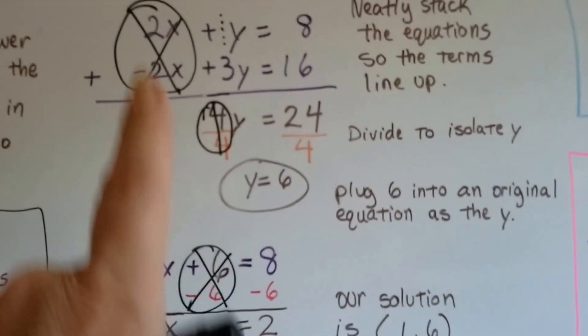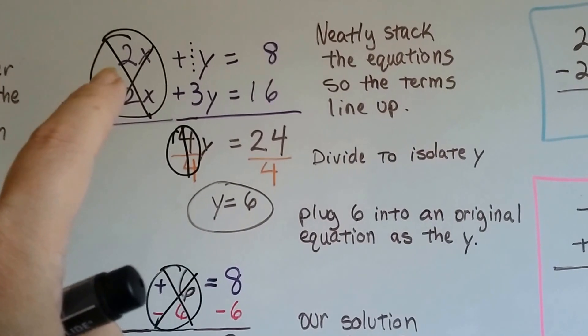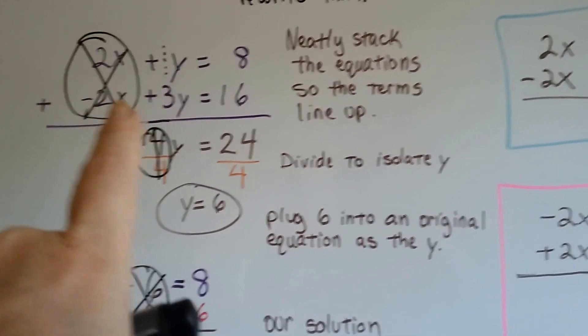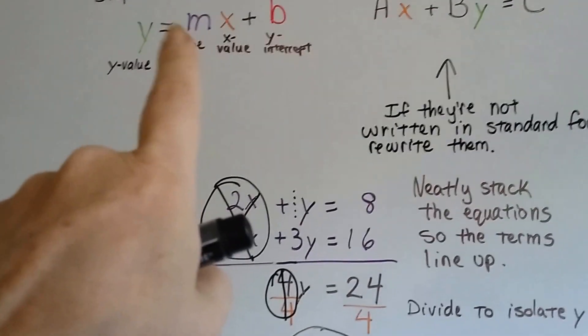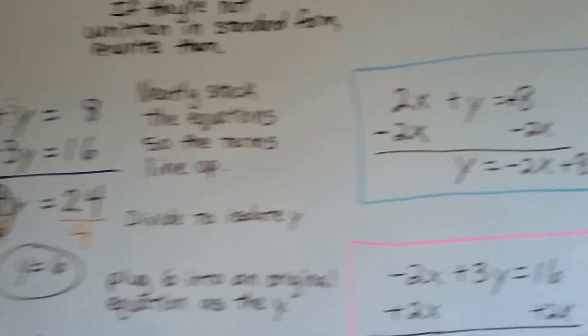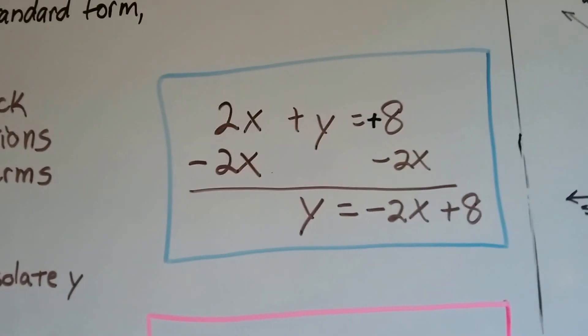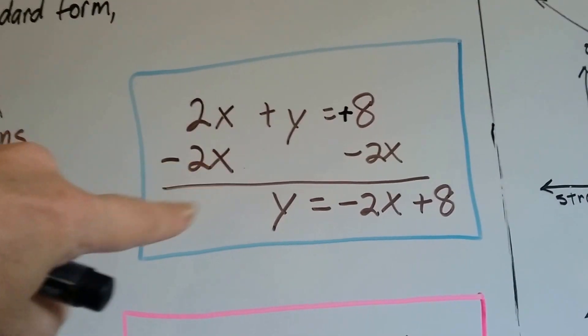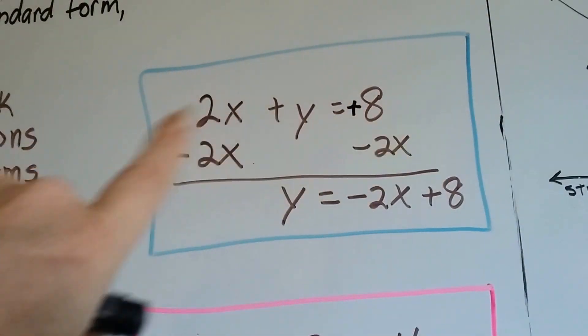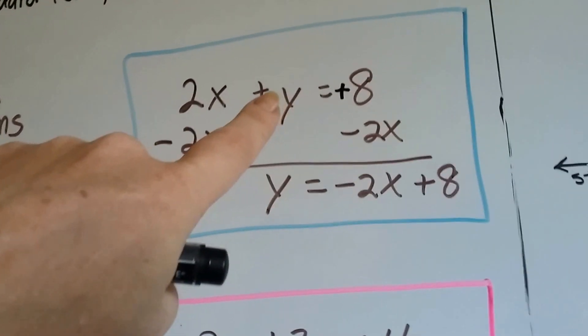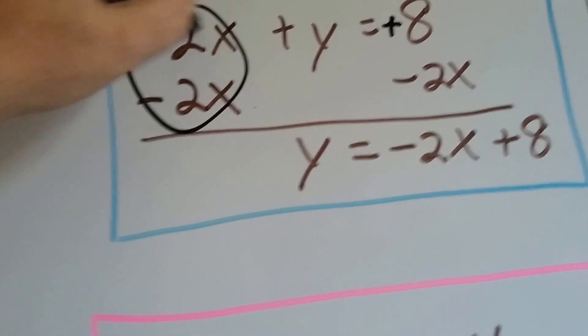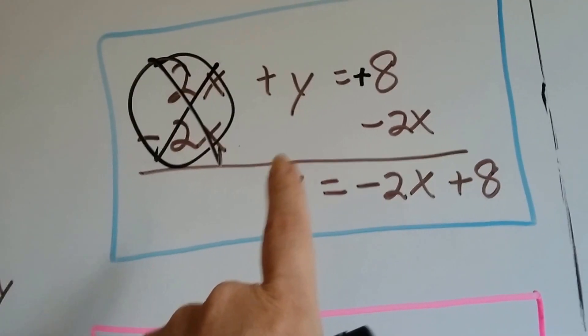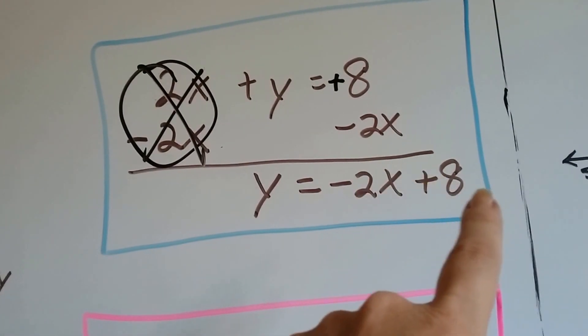Now, what we need to do is take these equations and rewrite them into slope-intercept form, so they're going to be easier to graph. So here's the first one. We have 2x plus y equals 8, and we're going to subtract 2x from each side to get this y up in front by itself, where it belongs. So we've eliminated him. Now we've got y equals negative 2x plus 8.